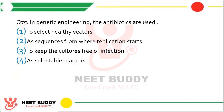Question 75. In genetic engineering, antibiotics are used: to select healthy vectors, as a sequence from where replication starts, to keep cultures free of infection, or as selectable markers? The correct answer is option 4 — they are used as selectable markers.